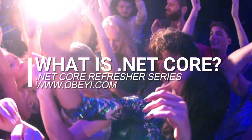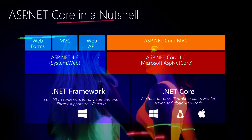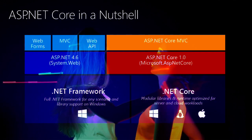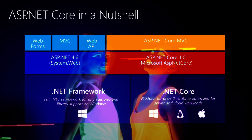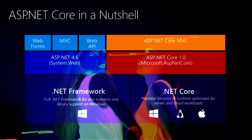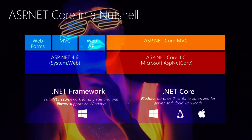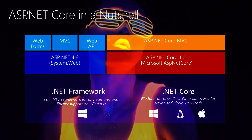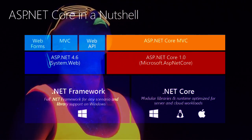ASP.NET Core is the open-source version of ASP.NET that runs on Windows, Linux, macOS, and Docker. It was first released in 2016 and is a redesign of earlier Windows-only versions of ASP.NET.